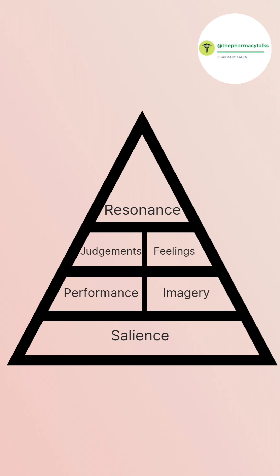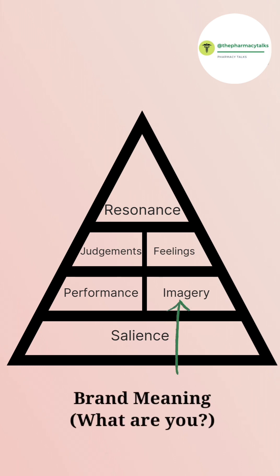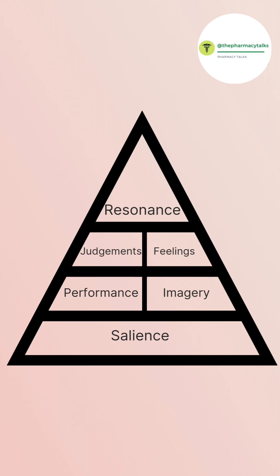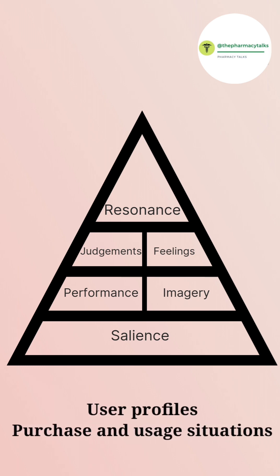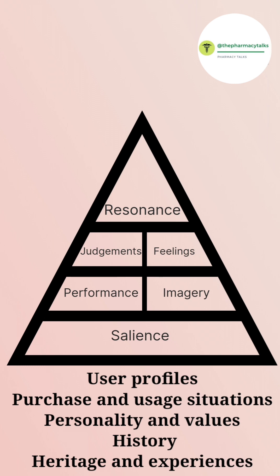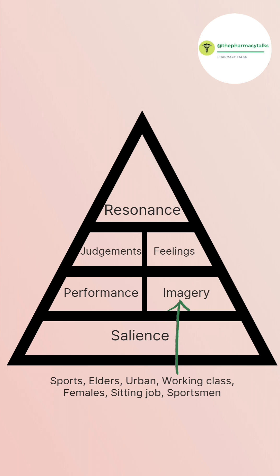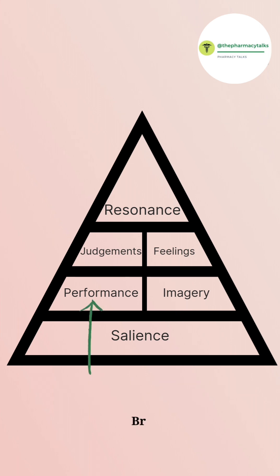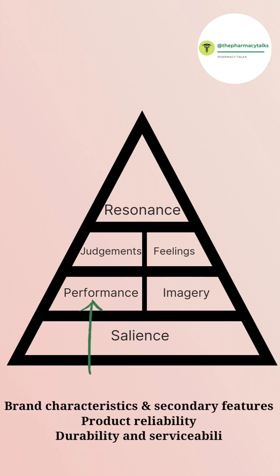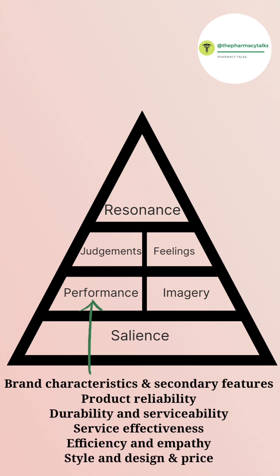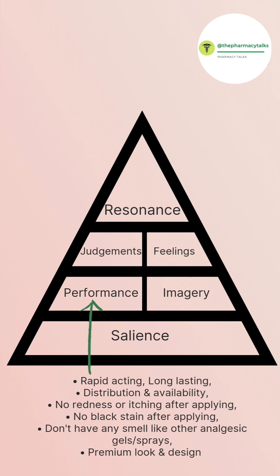The next stage of Keller's brand equity model talks about brand meaning — simply, what are you? It involves strong, favorable, and unique brand associations. The imagery part of this stage tells the user profiles, purchase and usage situations, personality and values, history, heritage, and experiences. Imagery for Quick includes: sports, elders, urban, working class, females, sitting job, and sportsmen. The performance part tells the brand characteristics and secondary features: product reliability, durability and serviceability, service effectiveness, efficiency and empathy, style and design, and price. Performance for Quick is that it is rapid and long lasting, its distribution and availability, no redness or itching after applying like other topical analgesics, no black stain after applying like Kayadex, no offensive smell like other products, and its premium look and design.